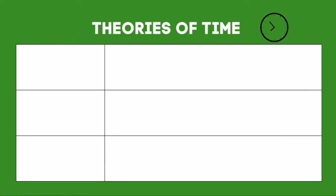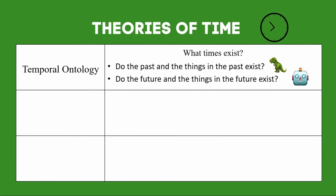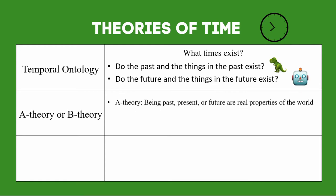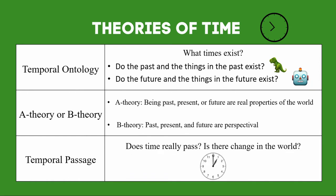A theory of time usually involves three parts. First, it has a temporal ontology — in other words, it talks about what times exist, answering questions like: do the past and the things in the past exist? Do the future and the things in the future exist? The second part explains if it is an A-theory, meaning that it thinks that the world is ordered by the past, the present, and the future, and that these concepts are real. Or a B-theory, meaning that these notions are only perspectival. Finally, it has an account on temporal passage — in other words, it will answer: does time really pass, or is it a matter of perspective?